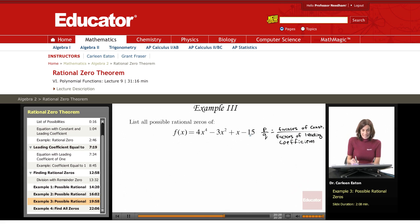So what this is going to give me is 15, 1, 3, 5, and 15 over factors of 4: 1, 2, and 4.